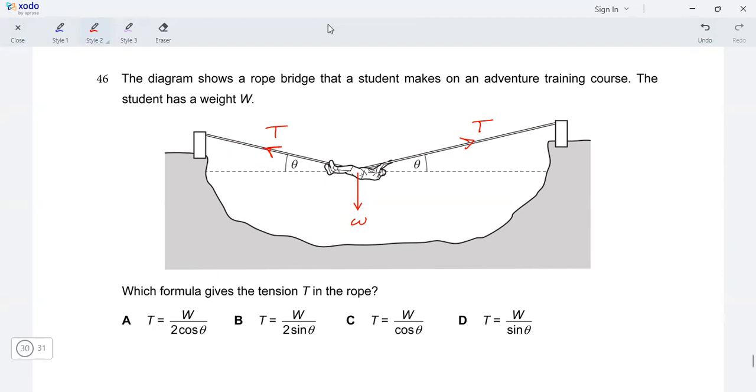Remember tension force, the direction of tension force is always away from the object. In this case, the object is the student. So the tension forces will be directed away from the student on both sides.